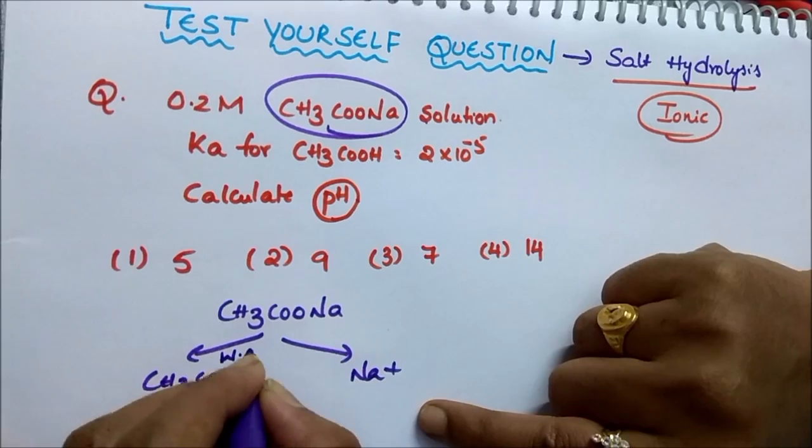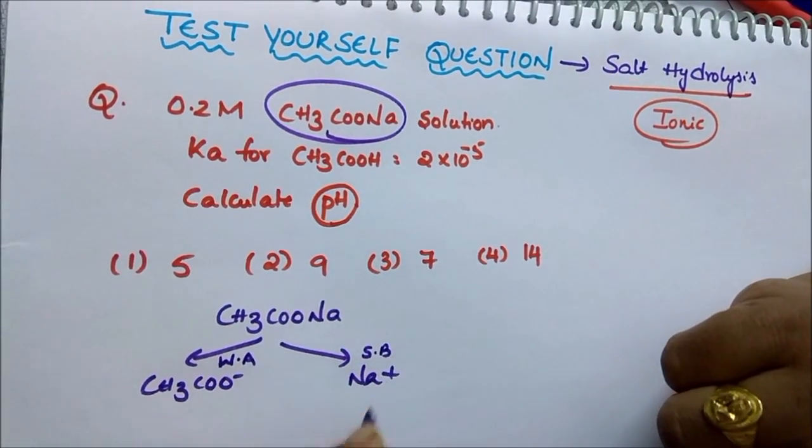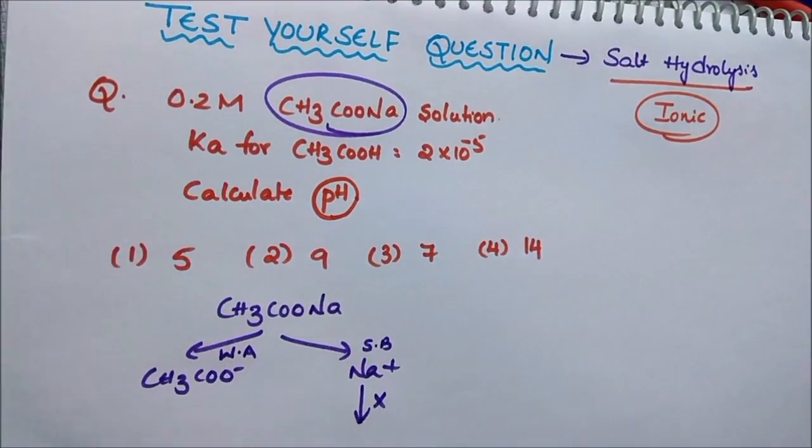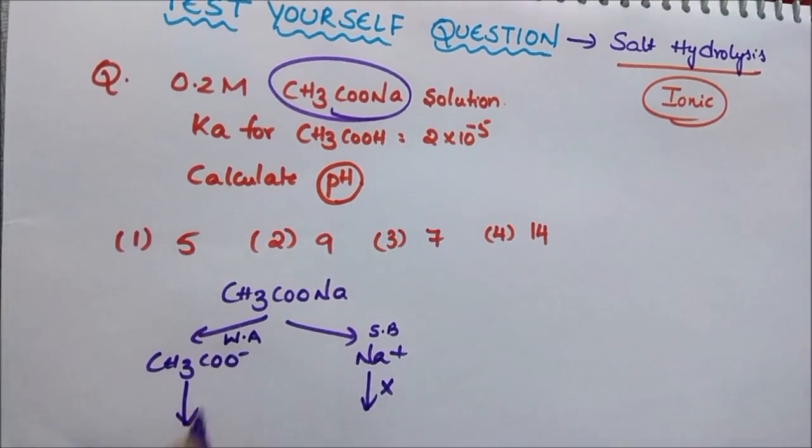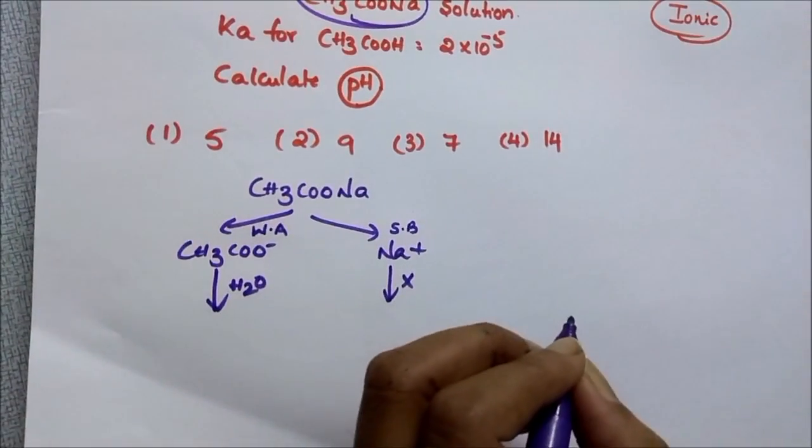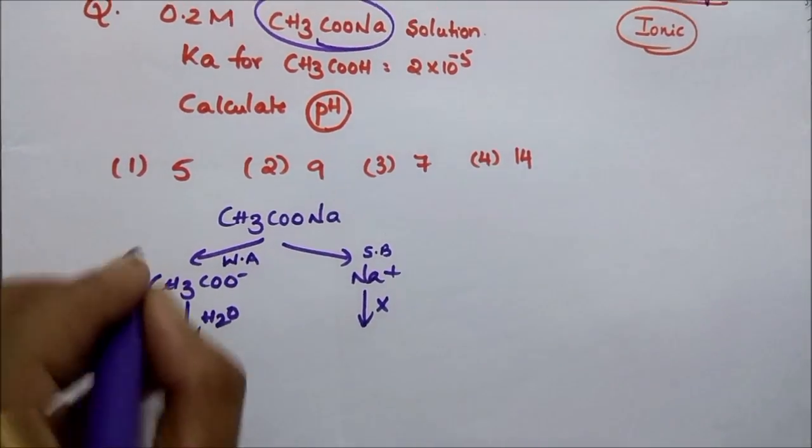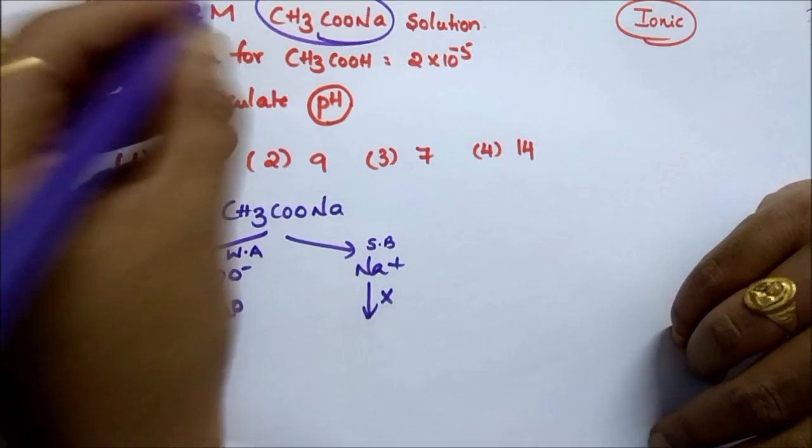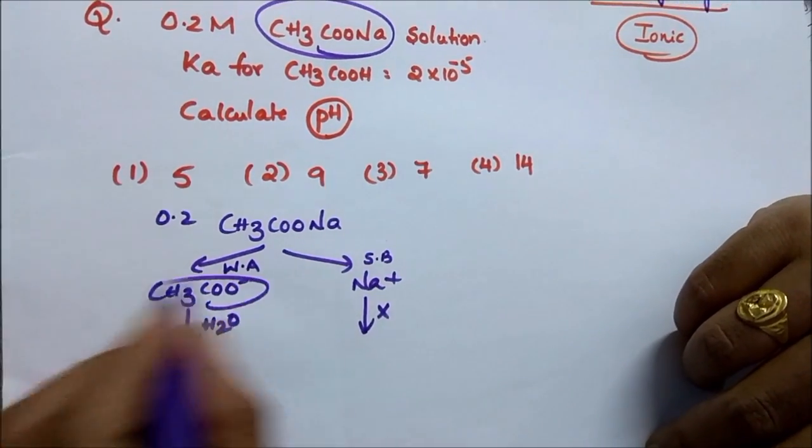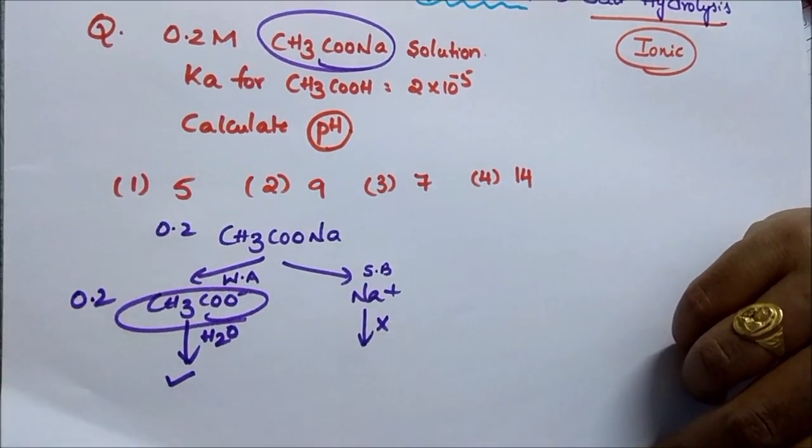It is weak acid and strong base. I already taught you strong base does not react with water, and only weak acid or weak base reacts with water. It is 0.2 molar given in the question, so it gives only one anion, its concentration is also 0.2 molar.